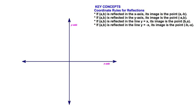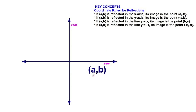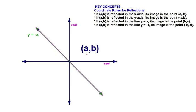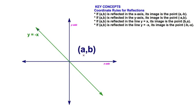Let's explore the coordinate rules for reflections in the coordinate plane. There are four rules we're going to be concerned with. We'll visualize this with an arbitrary point: reflecting over the x-axis, over the y-axis, across the line y equals x — that 45-degree line passing through the origin — and finally reflecting across the line y equals negative x. These are the four reflections we'll focus on.